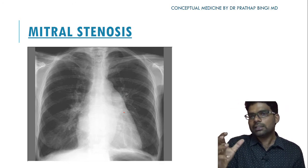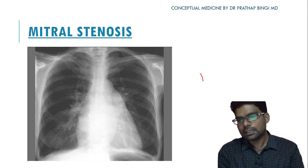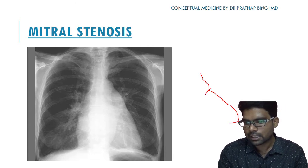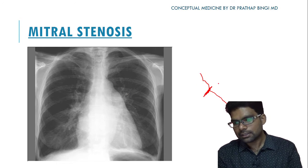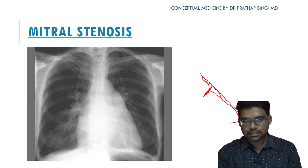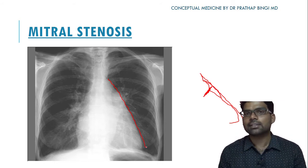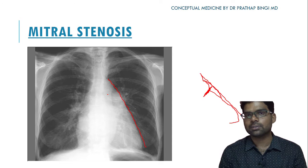On the left heart border in mitral stenosis: normally there is a notch between the aorta, pulmonary arterial bay, and left ventricle. In mitral stenosis, dilatation of the pulmonary trunk fills this notch, creating a straight left heart border — this straightening of the left heart border is a key feature of mitral stenosis.